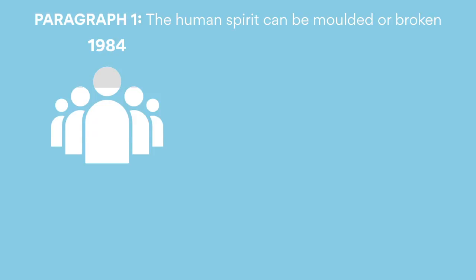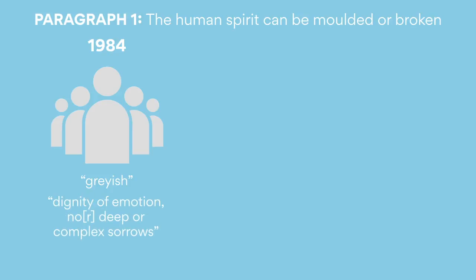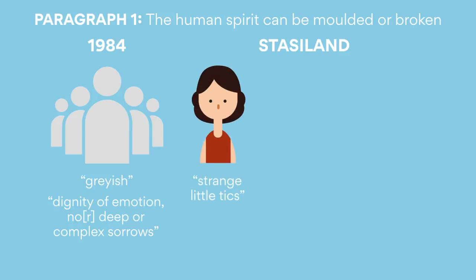Paragraph one: the human spirit can be molded or broken. In both texts, we see regimes manipulating and disciplining their denizens. In Orwell's Oceania, society has been rendered grayish and emotionless, and the will of the people has been reduced to virtually nothing. Without dignity of emotion, nor deep or complex sorrows, the human spirit is stunted and weakened, unable to feel shades of passion or emotion — the regime has simply deleted these elements of human nature. In Stasieland, Funda speaks to many people who have been disciplined because of the regime. This may refer to the actual punishment faced by people like Miriam, who was traumatized and left with strange little tics, or Frau Paul, out of whom the regime made a criminal.